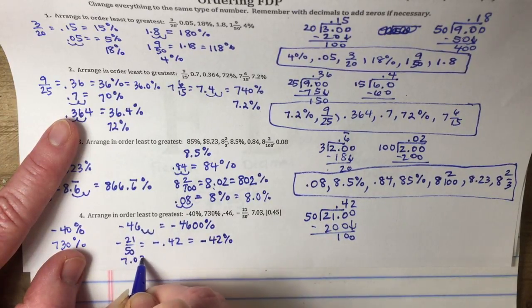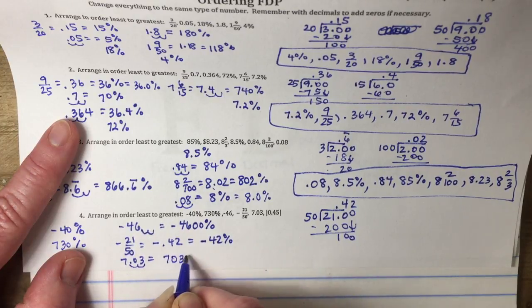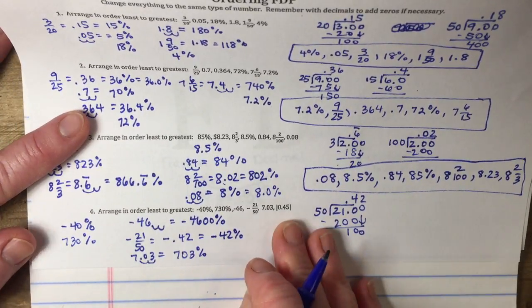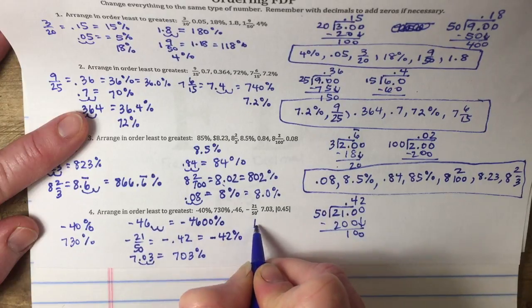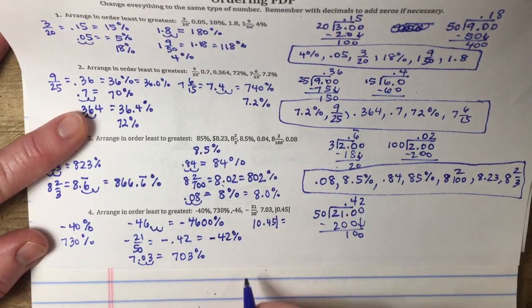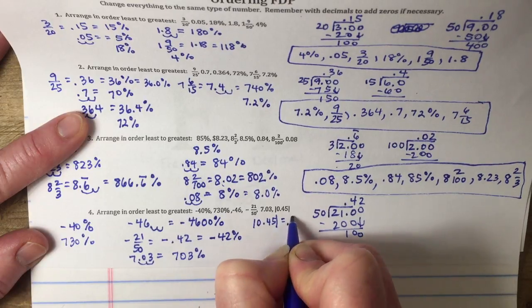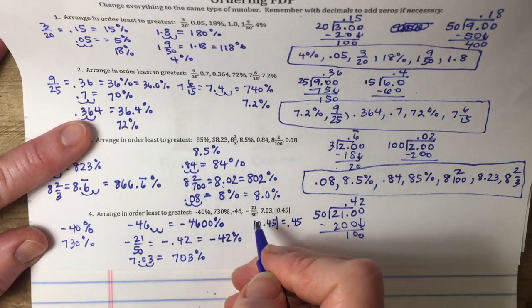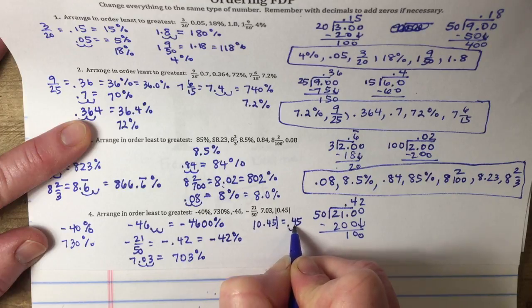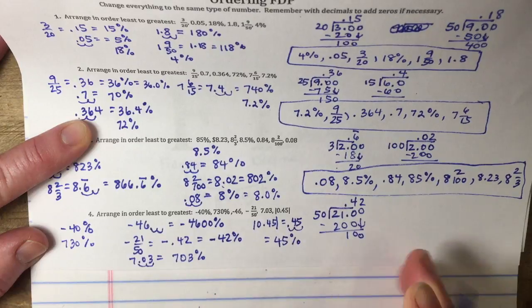Then I have 7.03 — moving two places gives 703%. And the absolute value of 0.45: remember, absolute value is just how far it is from zero, so it's still positive 0.45. As we say, if you go into prison you have to come out positive. Moving two places makes this 45%.